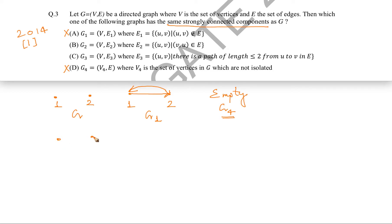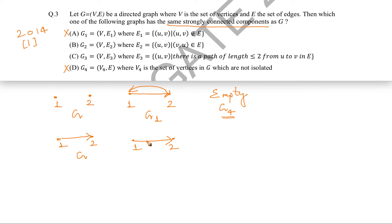Now consider a graph G with one edge from vertex 1 to vertex 2. For G3, vertices are the same and the edge set is defined as {(u, v) such that there is a path of length less than or equal to 2 from u to v}. From 1 to 2 there is a path of length 1, so that edge exists. From 2 to 1 there is a path of length 0, which is also less than or equal to 2, so that edge also exists in G3.